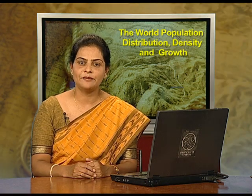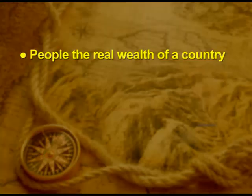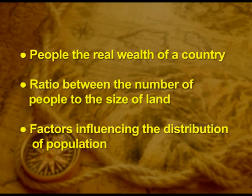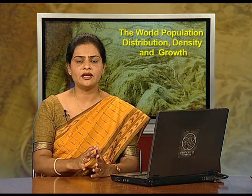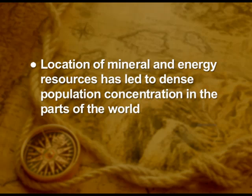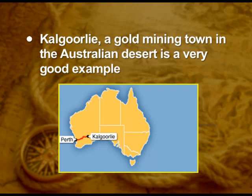Let us have a recap of what we have learnt so far: people — the real wealth of a country; the ratio between the number of people to the size of land known as density of population; and factors affecting distribution. So far we have learnt only geographical factors. Let us now learn economic and cultural factors. Location of mineral and energy resources has led to dense population concentration in parts of the world. Kalgoorlie, a gold mining town in the Australian desert, is a very good example.